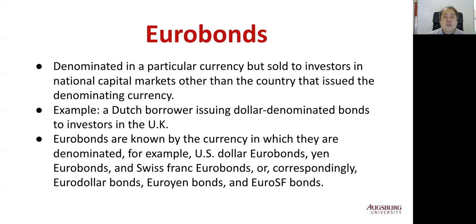Eurobonds are issued in countries other than the country of the denominated currency. The market for foreign bonds and eurobonds operates in parallel with domestic national bond markets, and all three market groups compete with one another. In any given year, roughly 80 percent of new international bonds are eurobonds rather than foreign bonds, so the eurobond market is larger than the foreign bond market.